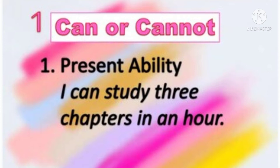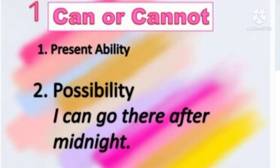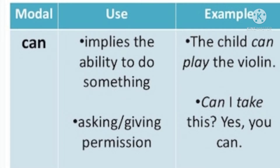The second usage of 'can' is to express possibility. For example, 'I can go there after midnight' — that means it is possible for me. 'I can reach out to all the people' — that is my possibility. 'Can' is also used for asking or giving permissions: 'Can I take this?' 'Yes, you can.' We use this in our daily lives — 'Can I ask you something?' 'Can I open the door?' — all these are requests for permission.